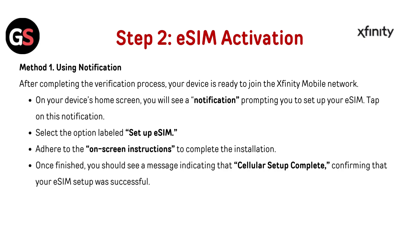Step 3: eSIM activation. Method 1 — Using notification. After completing the verification process, your device is ready to join the Xfinity Mobile network. On your device's home screen, you will see a notification prompting you to set up your eSIM. Tap on this notification and select the option labeled Setup eSIM. Follow the on-screen instructions to complete the installation. Once finished, you should see a message indicating that cellular setup is complete, confirming that your eSIM setup was successful.